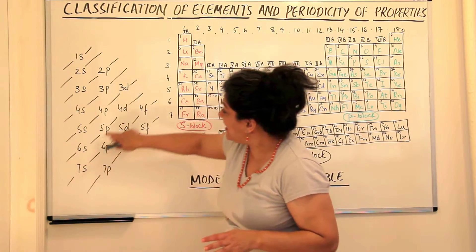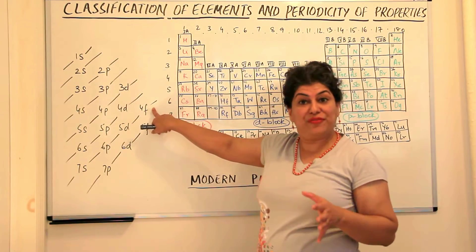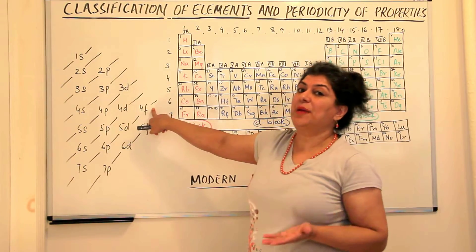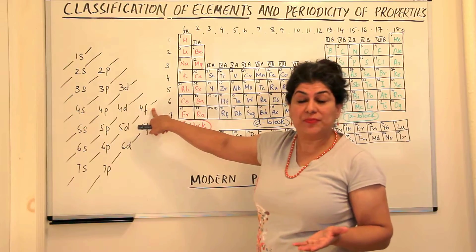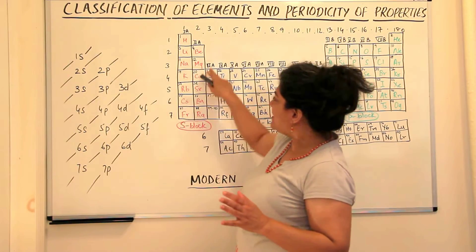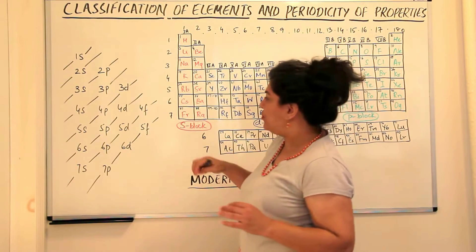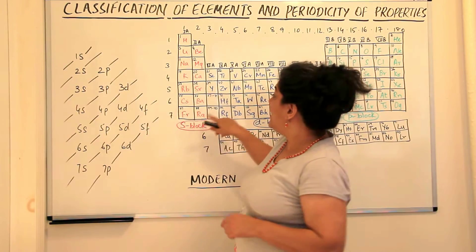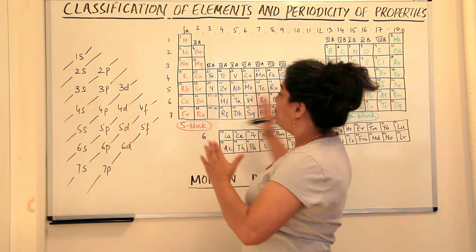So once the 6s is being filled up, we find the next electron goes to 4f and f has 7 orbitals and it has a capacity of 14 electrons. So logically, just as we had the d orbitals in between, we should have 14 f orbitals here now. There should be a gap of 14 orbitals.